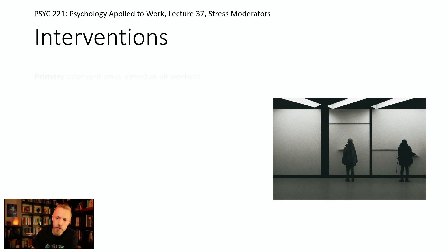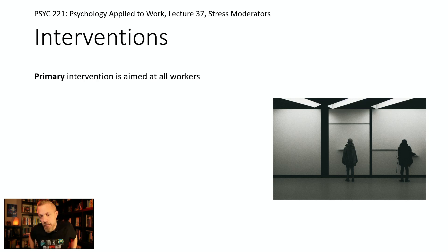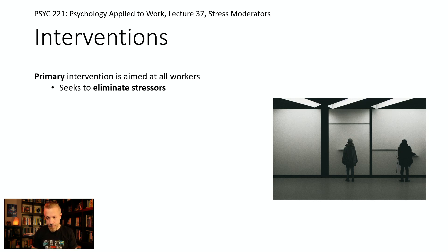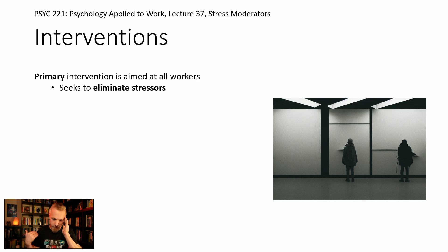Let's talk about interventions. A primary intervention targets everyone in the organization — the main goal is to find out where the stressors are and eliminate them. Fix the air conditioning, don't overload people's plates, put policies in place that reduce the actual number of stressors. Think about workplace conditions and job design — can you do a job redesign to eliminate stressors? You can also reduce whether stressors become strains by incorporating recovery opportunities at work.